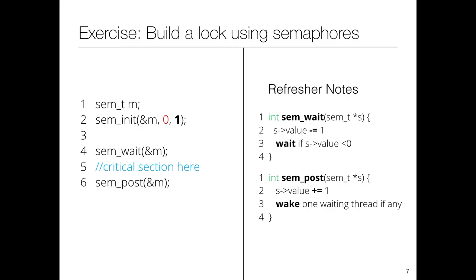We also started building a lock using semaphores. We saw how to build a lock with a semaphore: initialize to one, call wait before the critical section, and call post after the critical section. The definition of semaphore wait is: decrement the value, wait if the value is negative. For post: increment the value and wake up one thread.